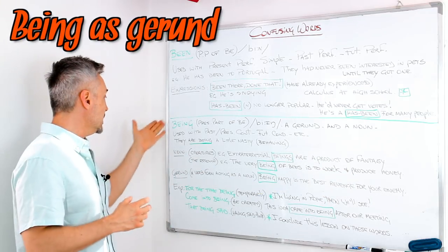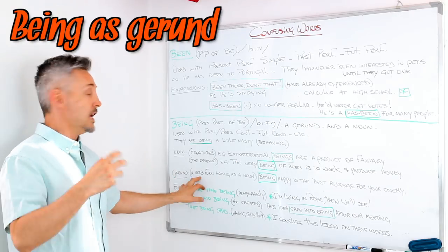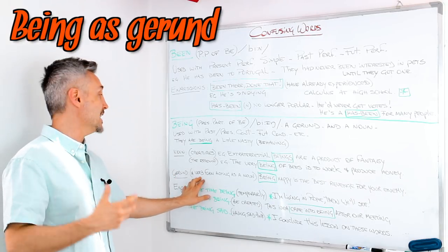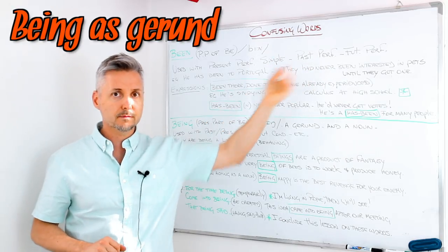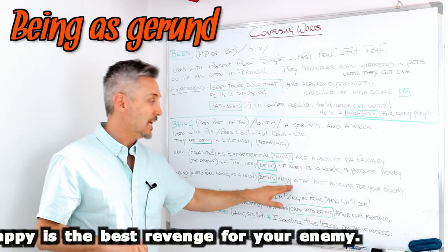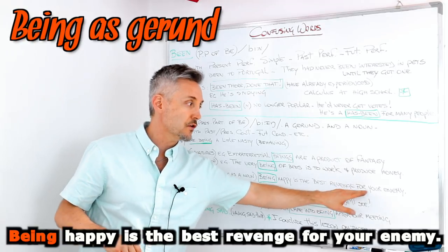So being can also be a gerund. It's a verb form acting as a noun. There is a lesson on gerunds. You may click here. Being happy is the best revenge for your enemy.